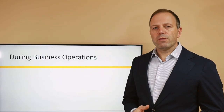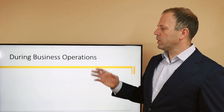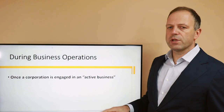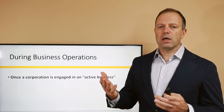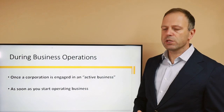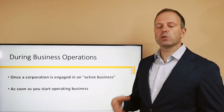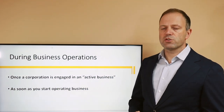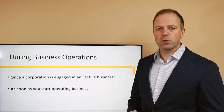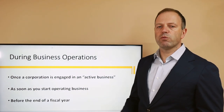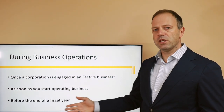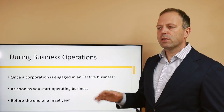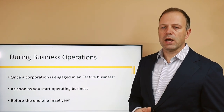The second situation when we have to register extra-provincially is when we already operate an existing business and it grows, creating active business operations in a province other than the initial jurisdiction of incorporation. As soon as that happens, we have to go and register in that province to get the extra-provincial registration and the corporation number issued by that province. This should definitely be done before the end of the fiscal year, because it will affect the taxation you report on your annual tax returns.